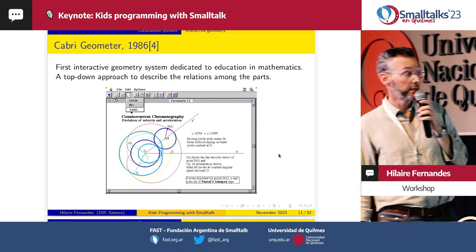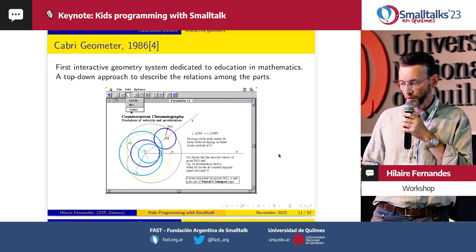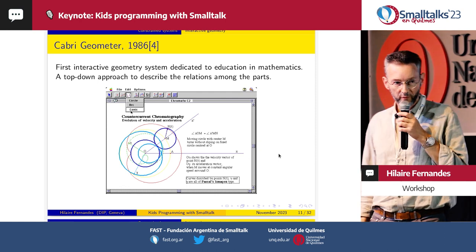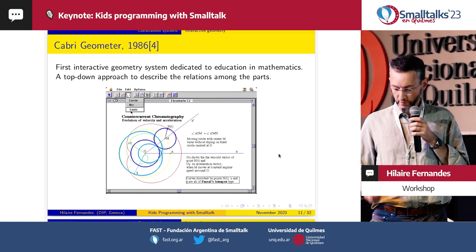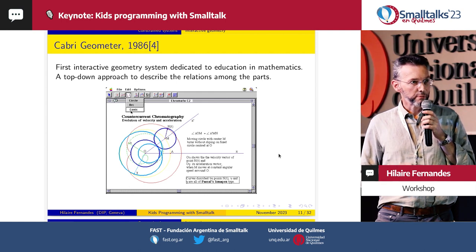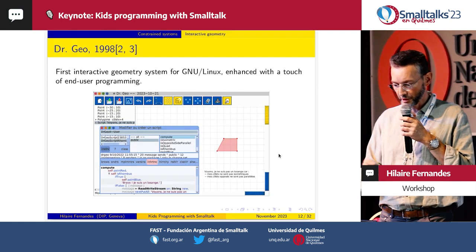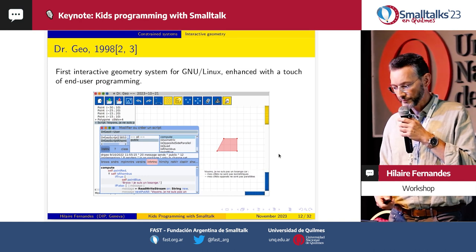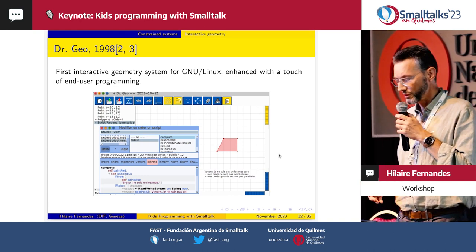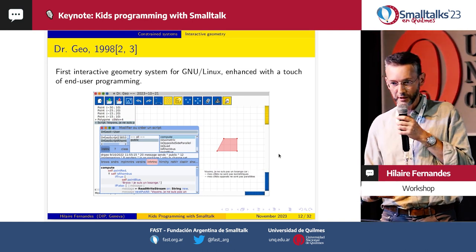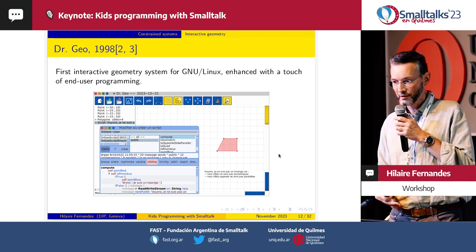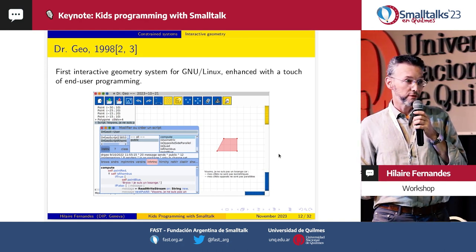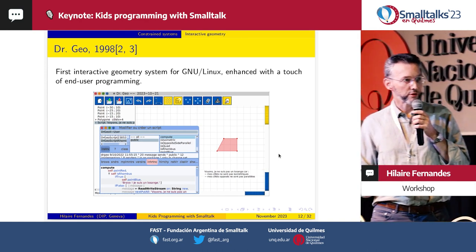When I was a student training to be a teacher, I was at that university and the teachers showed us this software. I wanted to use it in class, but it was too expensive for the school — so that's when I decided to write Dr. Geo, before 2000. Dr. Geo was the first dynamic Interactive Geometry System for Linux. Here is the final version we have in Cuis, with some Smalltalk scripting.